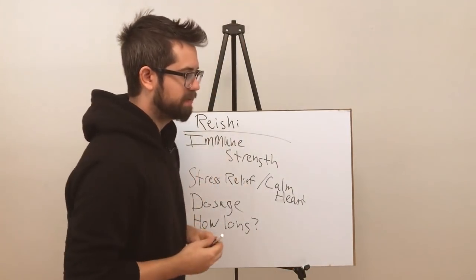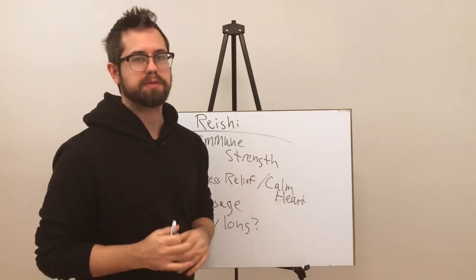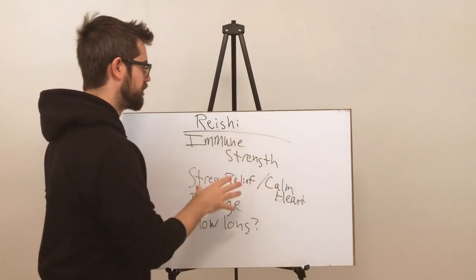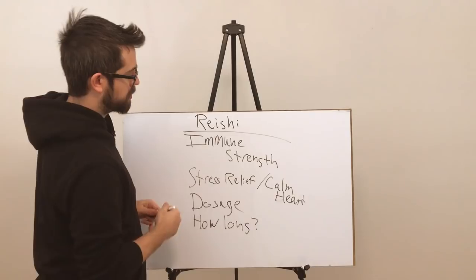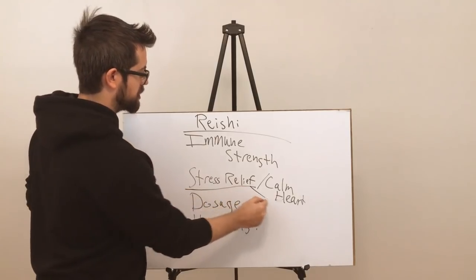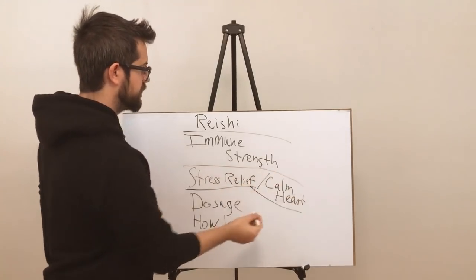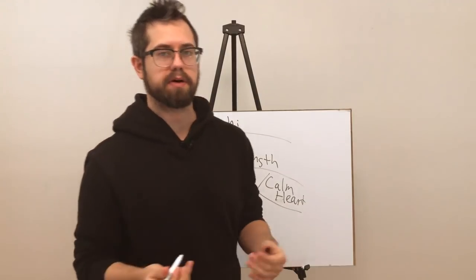Cordyceps and chaga and a couple other mushrooms have similar effects but reishi is really great for this and more especially because of its stress relief and ability to what they say calm the heart.